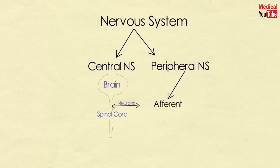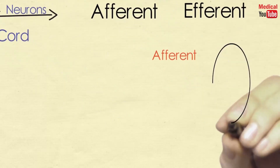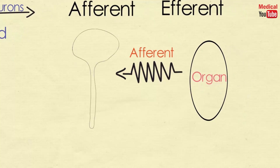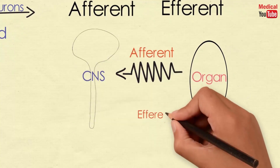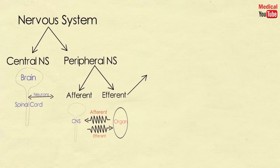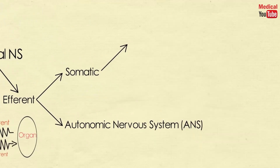The peripheral nervous system is subdivided into the efferent and afferent divisions. The afferent neurons bring information from the periphery to the CNS, and the efferent neurons carry signals away from the brain and spinal cord to the peripheral tissues. The efferent portion of the peripheral nervous system is further divided into two major functional subdivisions: the somatic and the autonomic nervous system.